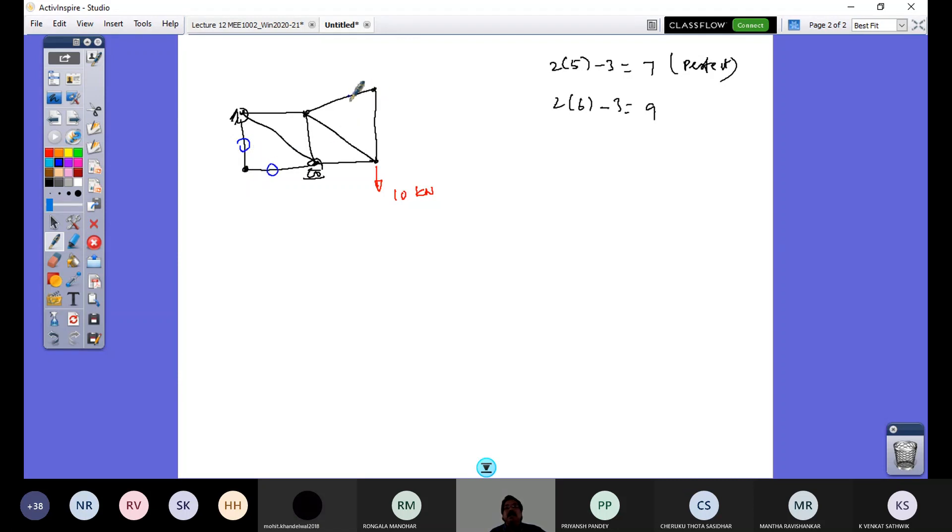Similarly, this is a joint where there are two members. These both should be under zero force member. So these zero force members are existing for the stability of the structure, also to accommodate load loading later on. So I can put a load now, load Q here.